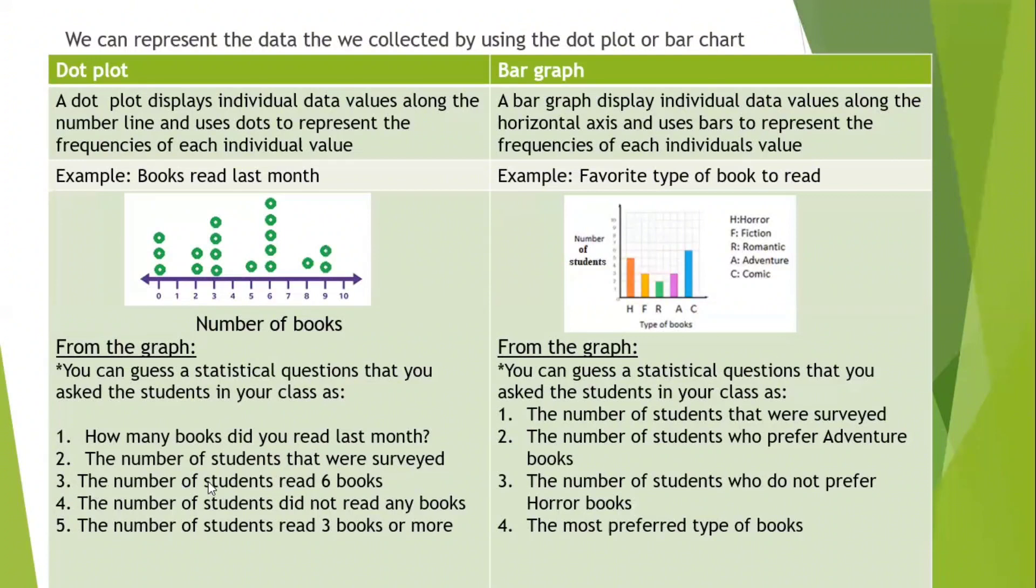Three, the number of students read six books. How many students read six books last month? One, two, three, four, five. Number four, the number of students did not read any books. Three. Number five, the number of students read three books or more. I will count all these values. They are the ones who read three books or more than three books.